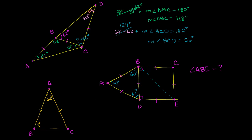That 60 degrees is part of angle ABE, but we have to figure out this other part right over here. We're actually dealing with an isosceles triangle tipped over to the left. This is the vertex angle at 90 degrees, this is one base angle, and this is the other base angle. We know it's isosceles because segment BD equals segment DE. These two base angles plus 90 degrees must add up to 180 degrees, so if we call each base angle x, we get x plus x plus 90 equals 180.